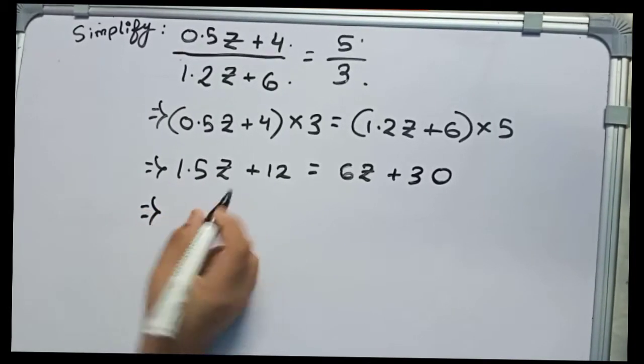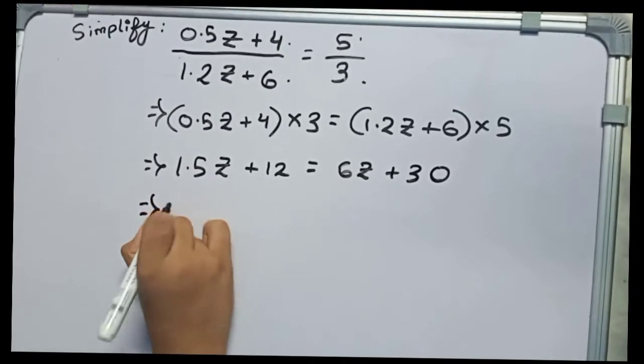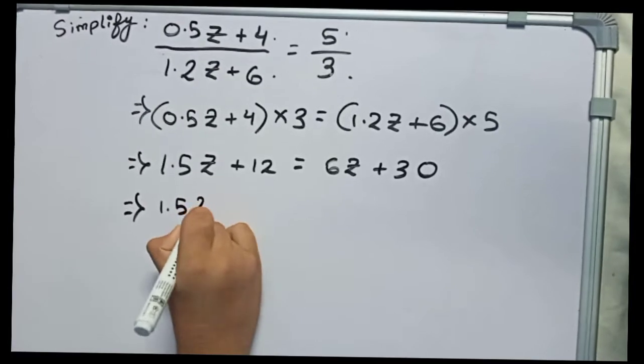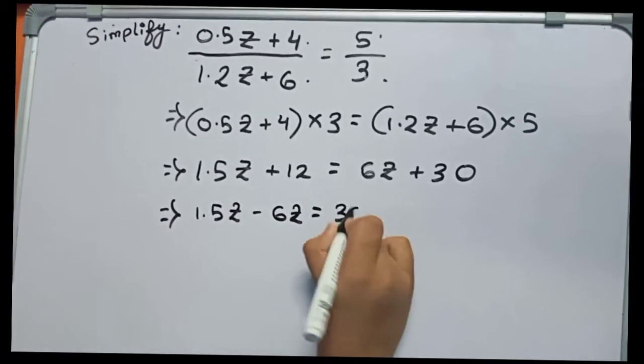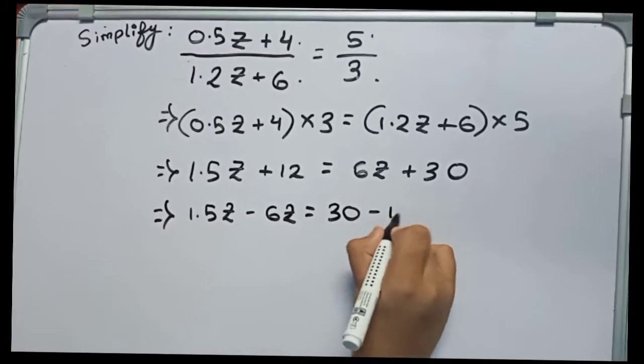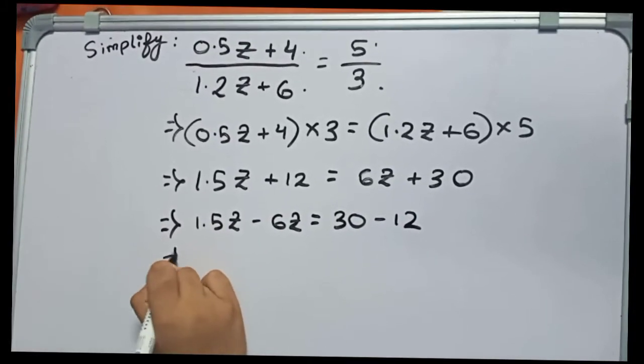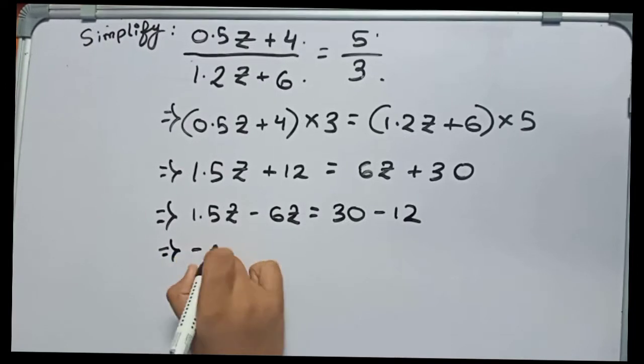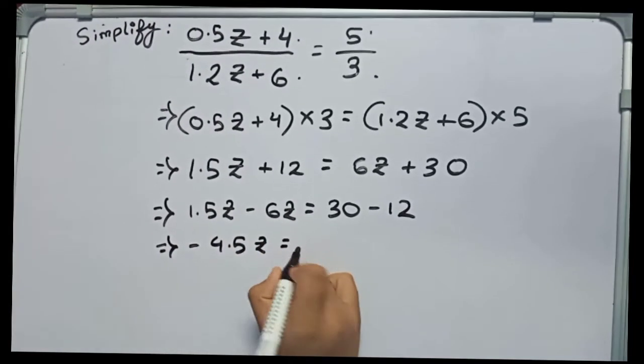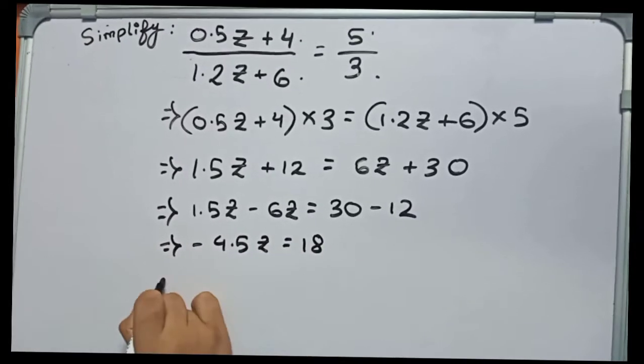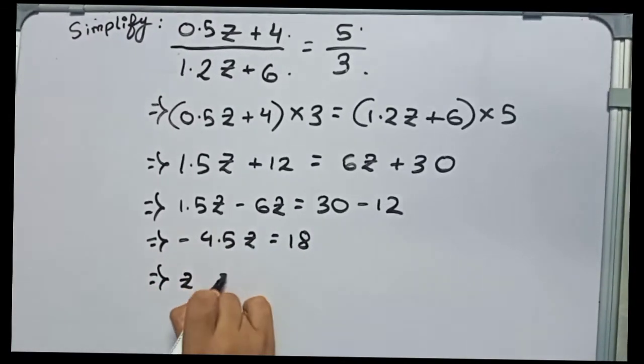We take 6z to this side: 1.5z minus 6z equals to 30. We take 12 to the right side minus 12. It becomes minus 4.5z equals to 18, or z equals to 18 by minus 4.5.